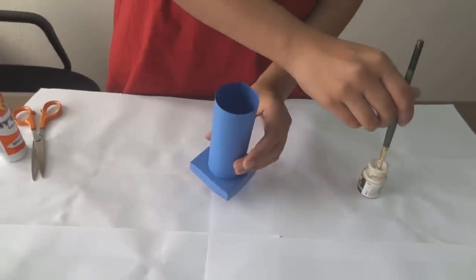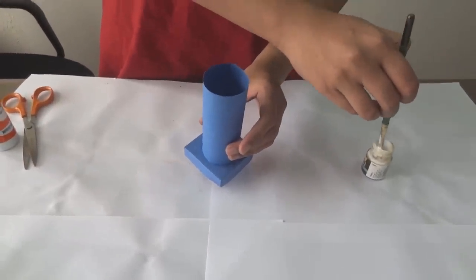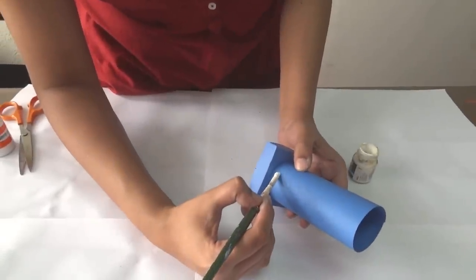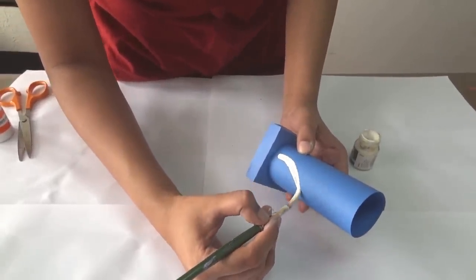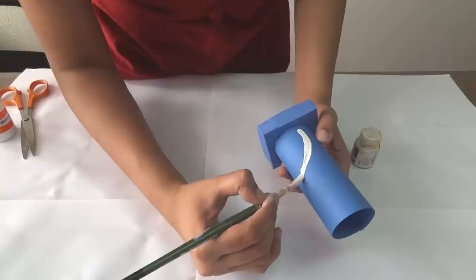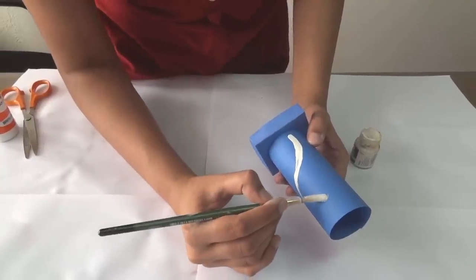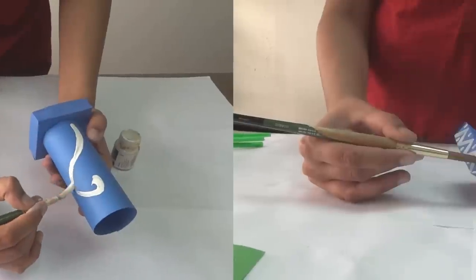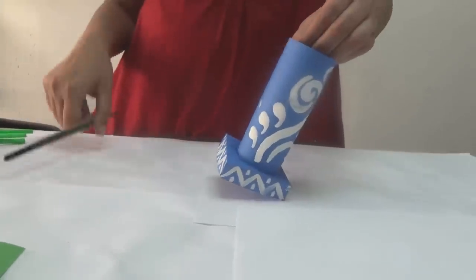Now you can make a design on your pot. Use poster colors. We will use white here to make a circle look nice. Make a design of your choice. Once you finish painting your pot is ready.